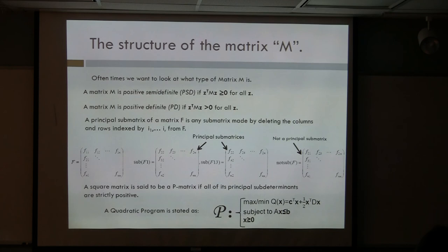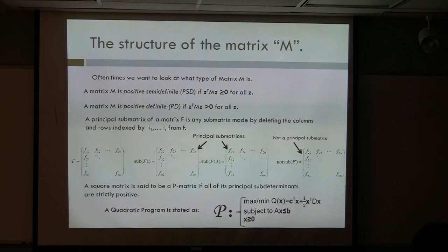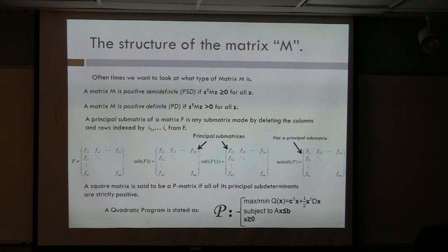If we take the next step up, a quadratic program has a quadratic function where the matrix D is your quadratic form. If the matrix D is positive definite, then you know you're going to have a global minimum for your problem. There are theorems to prove that, but the idea is that what you really care about is the form of the matrix M.